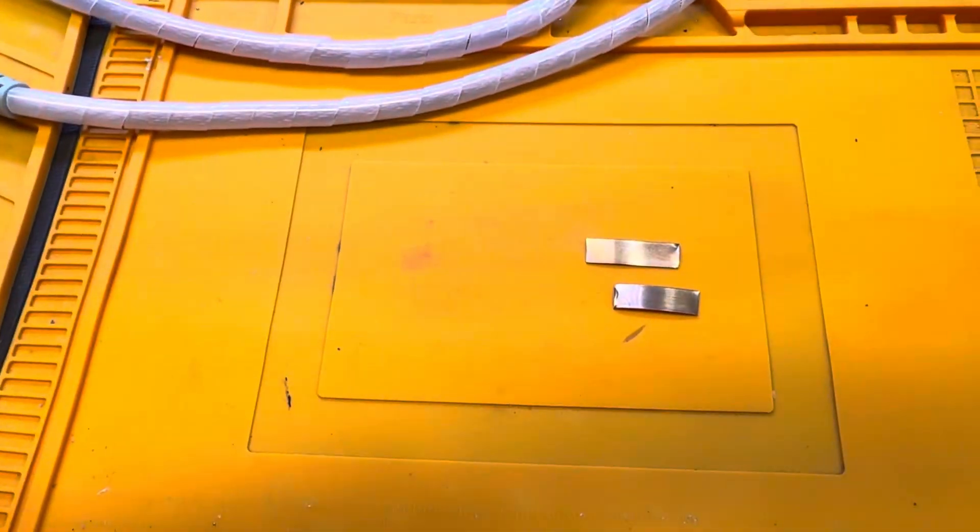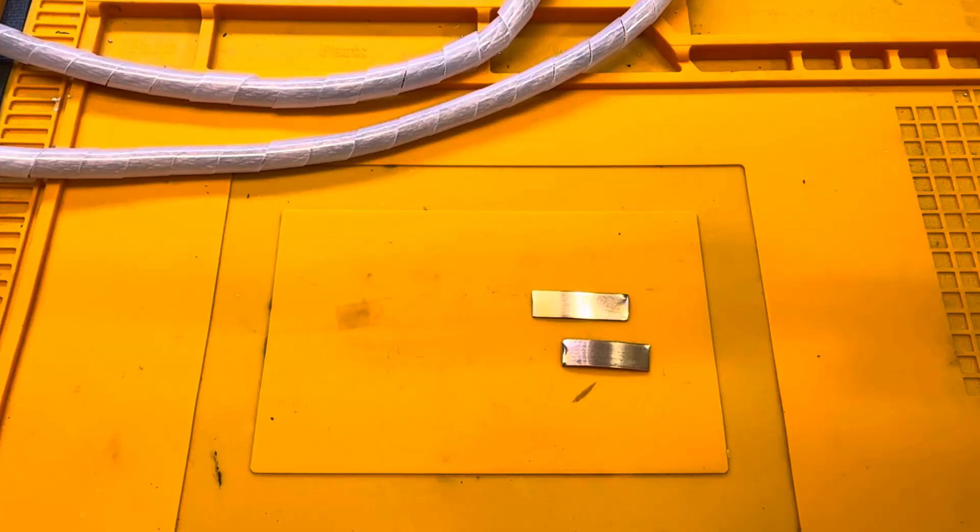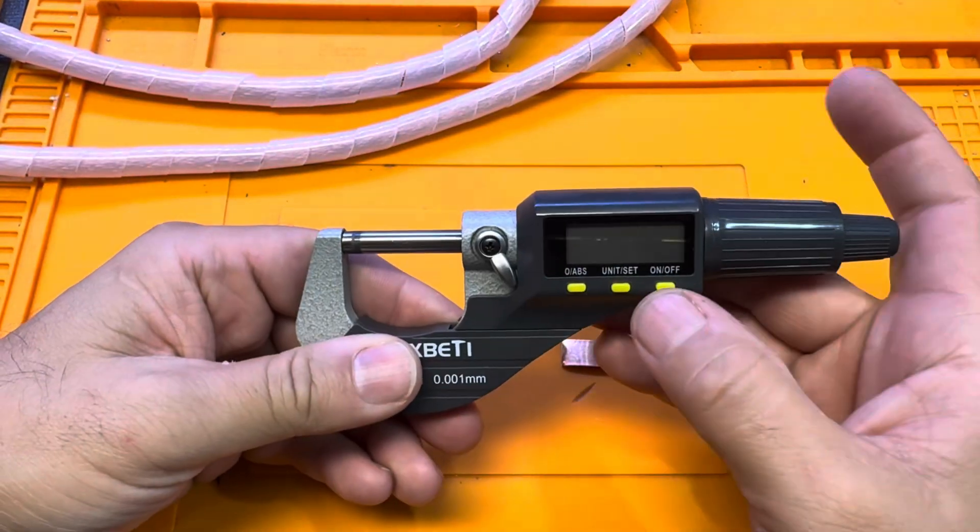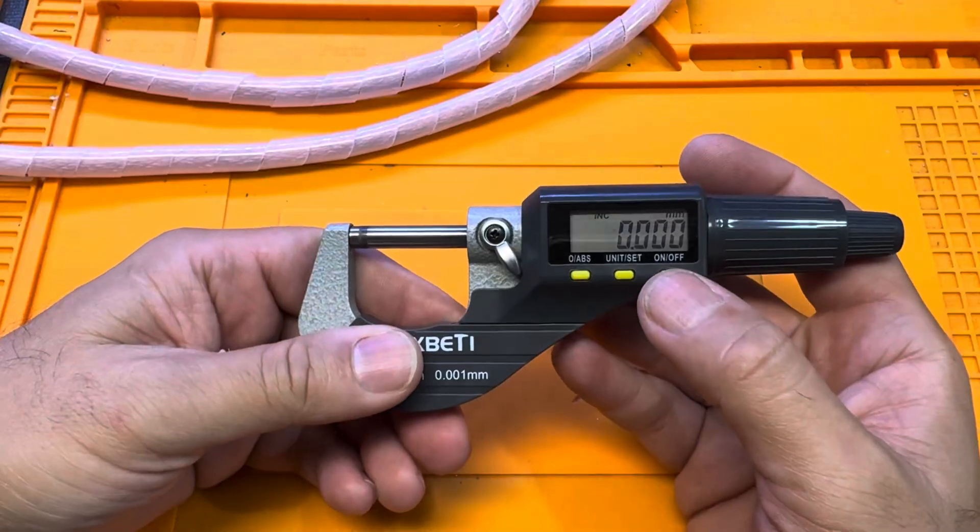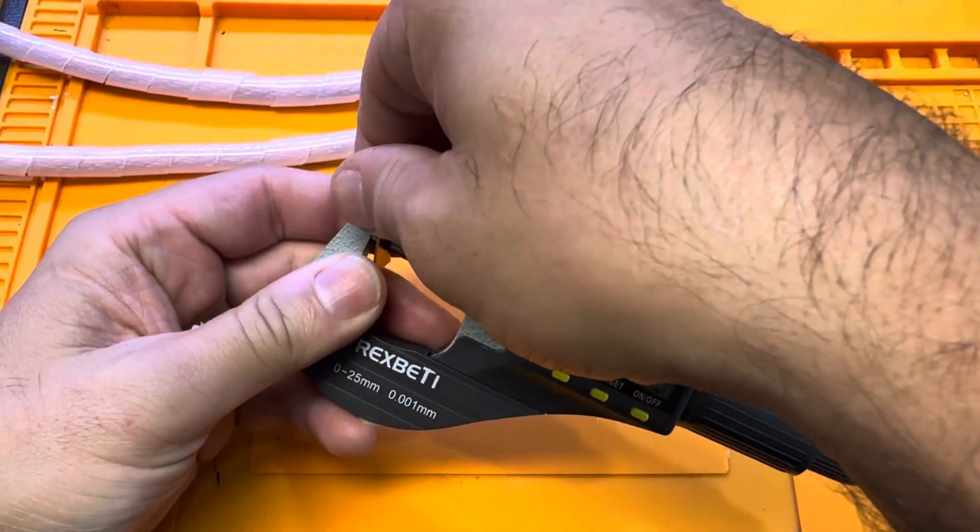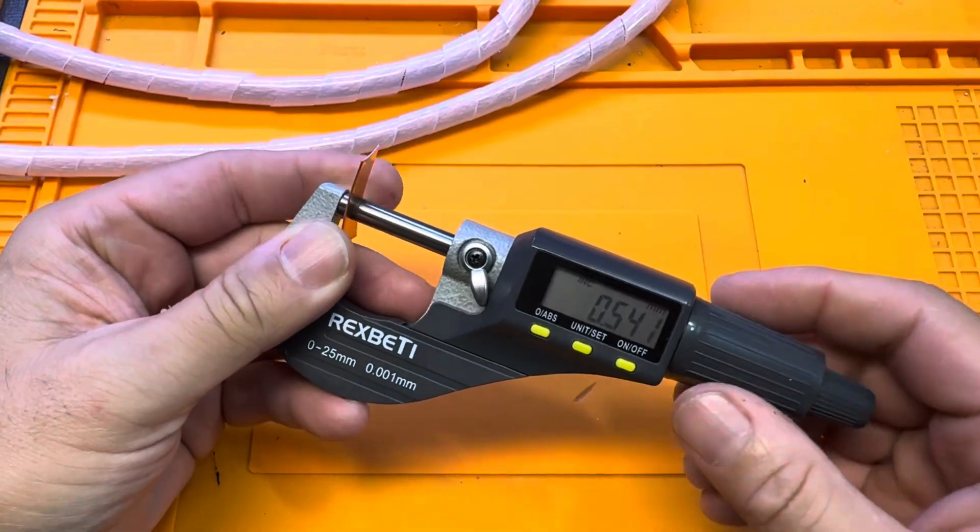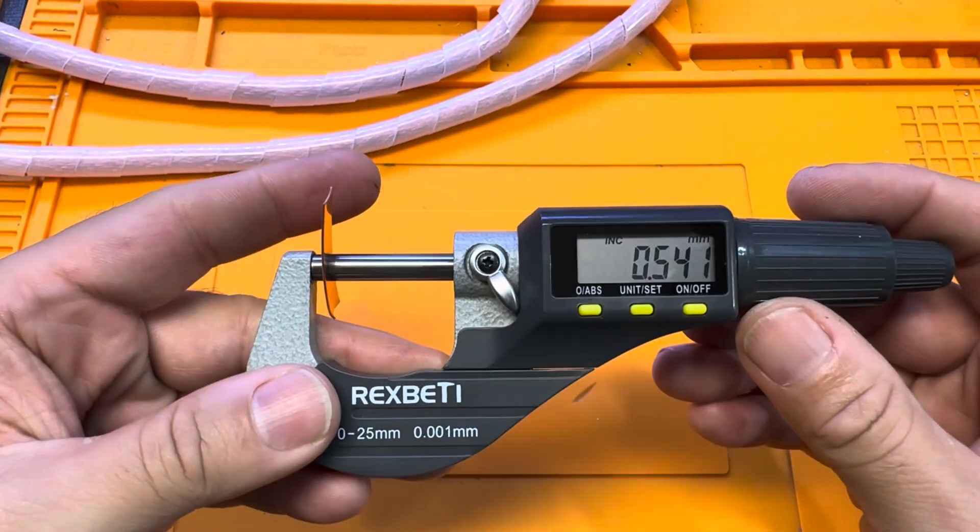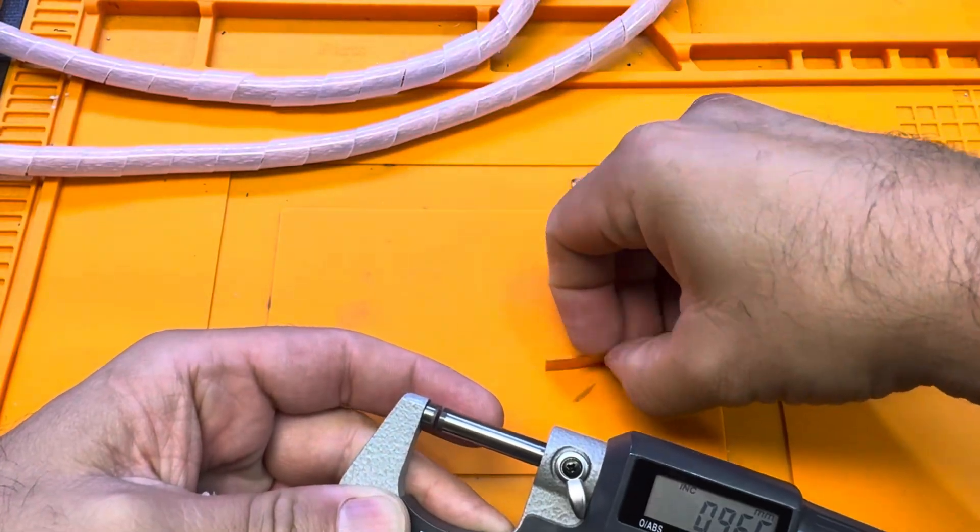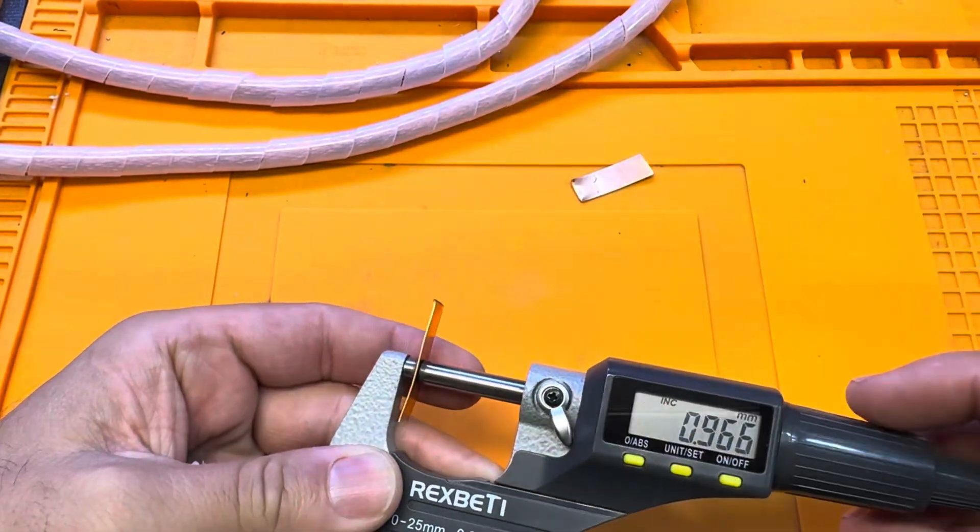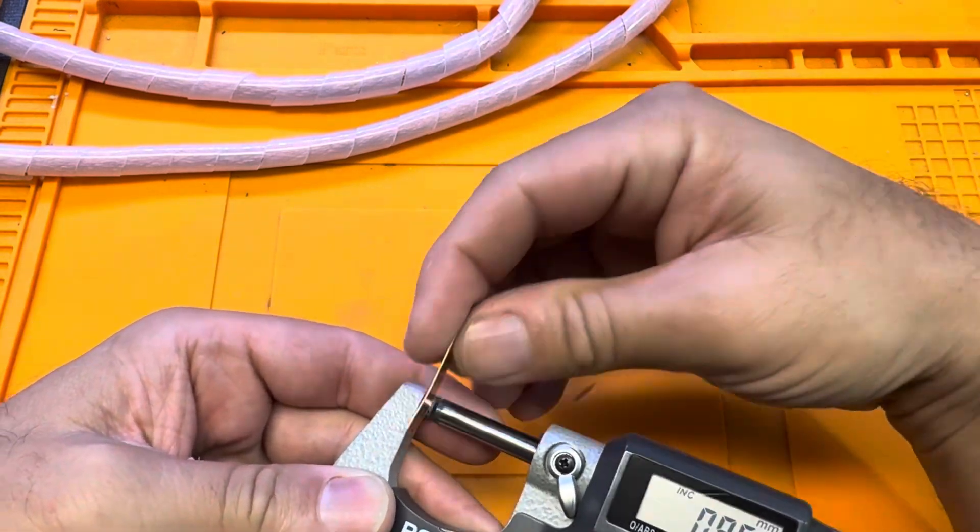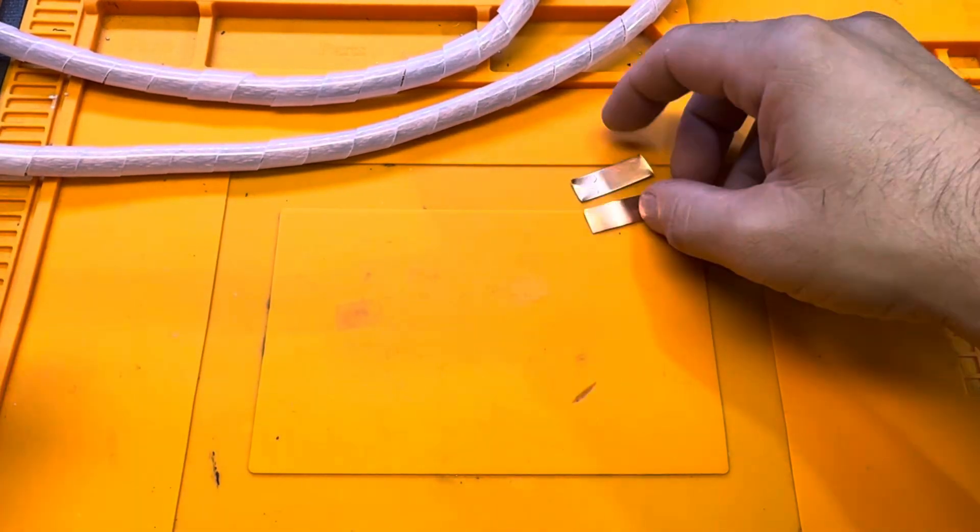Let's go and check and put the cell phone here. That's my new tester to check copper, the thickness. Let's check. So you see here, it says actually 0.54. Let's check the other one. 0.52. Well, we're a little bit over 5, but that's fine.